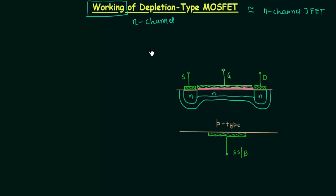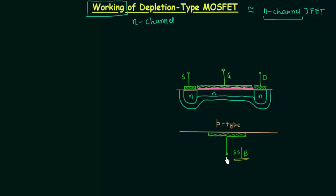The N-channel in case of depletion type MOSFET is there from the beginning, just like in case of N-channel JFET. So the channel is there from the beginning in both cases. In case of a 3-terminal MOSFET, the substrate or body terminal is connected internally to the source terminal and after this it is grounded.